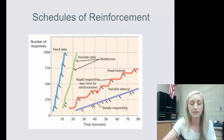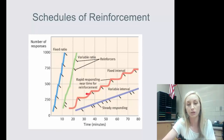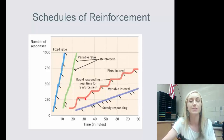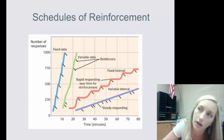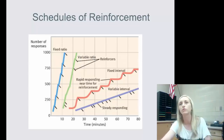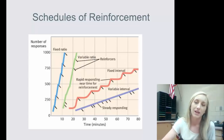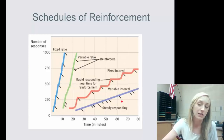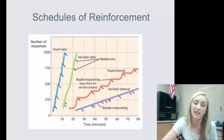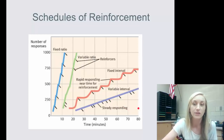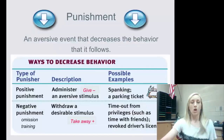With fixed interval, there's rapid responding near the time for reinforcement, but a lapse in responses otherwise because the subject knows when reinforcement is coming — they think, 'I'll do this a few more hours and then I'll be reinforced.' Whereas variable interval shows very steady responding because they don't know when reinforcement is coming, so they're more likely to keep responding.